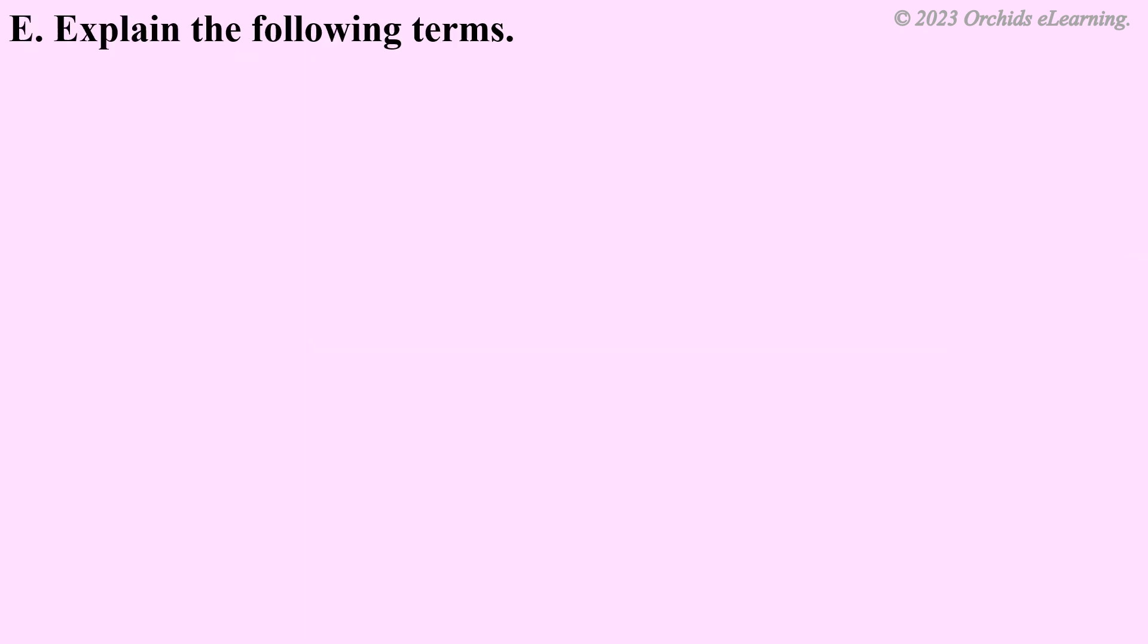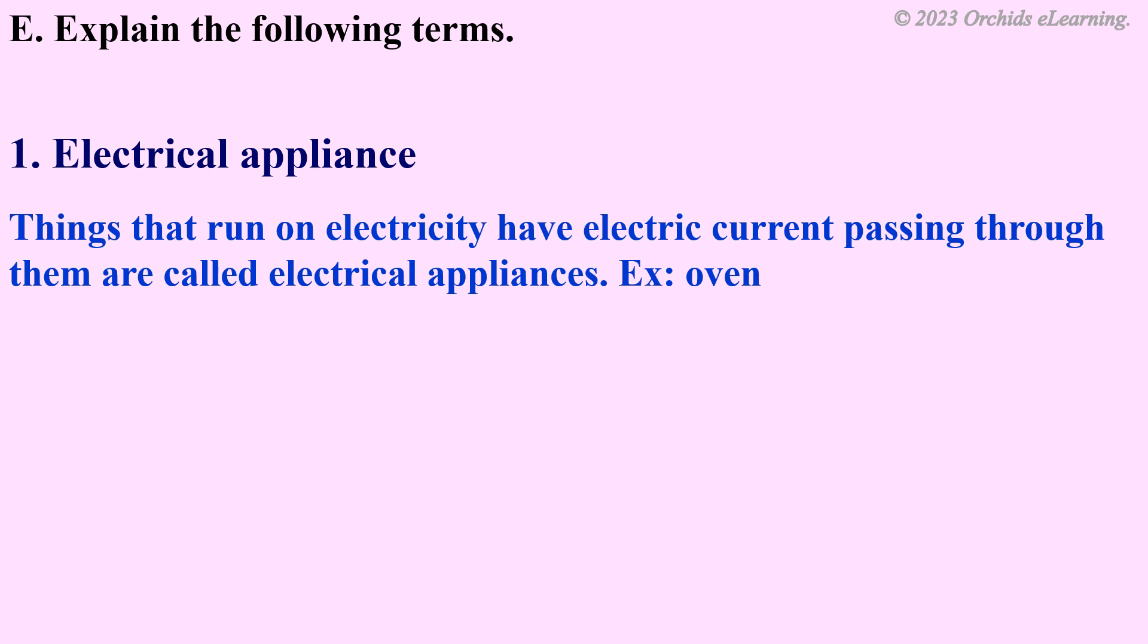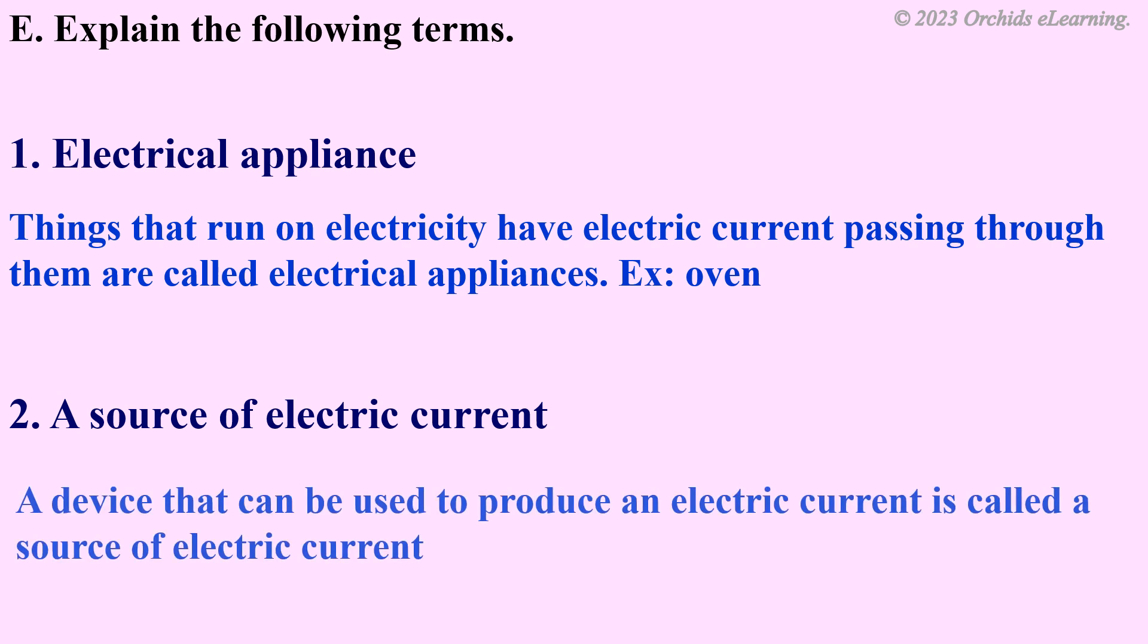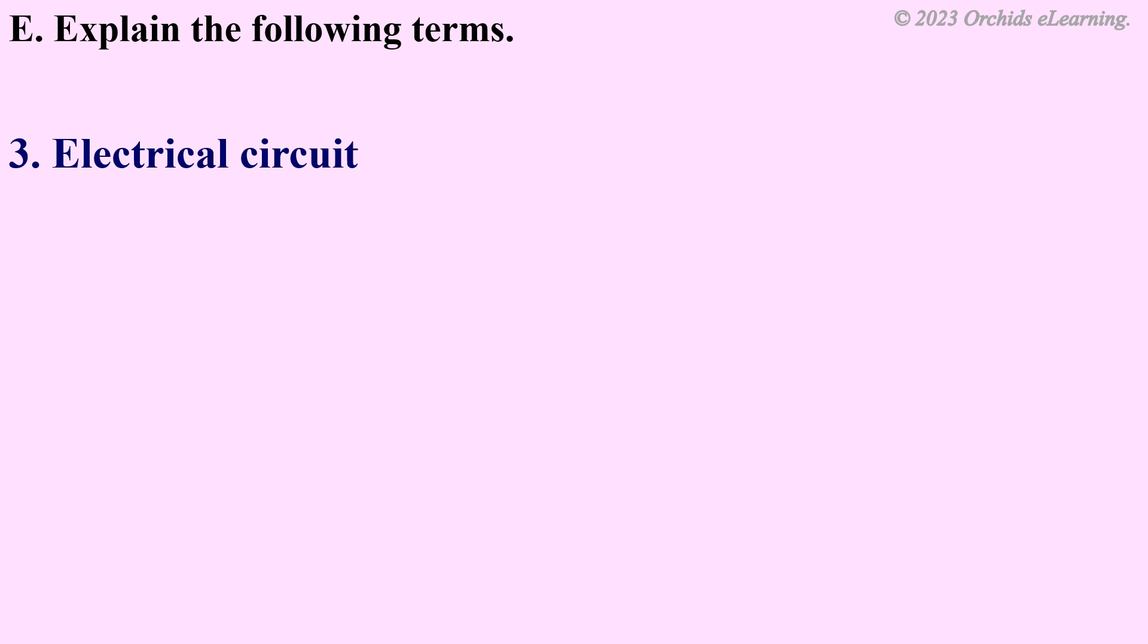Explain the following terms. Electrical appliance: Things that run on electricity and have electric current passing through them are called electrical appliances or devices, for example, oven. A source of electric current: A device that can be used to produce an electric current is called a source of electric current. Electrical circuit: